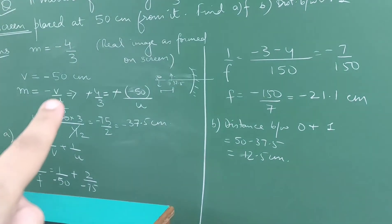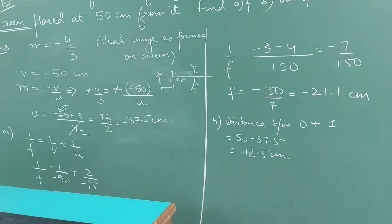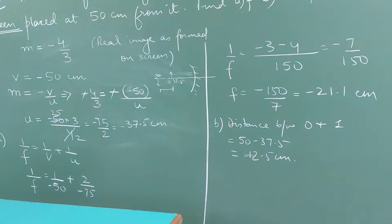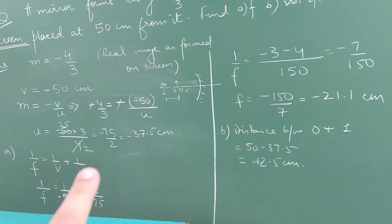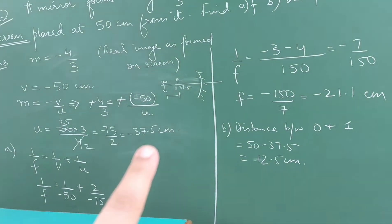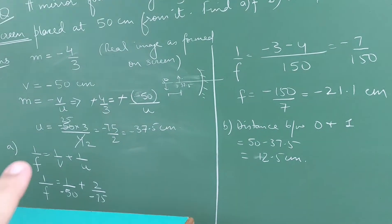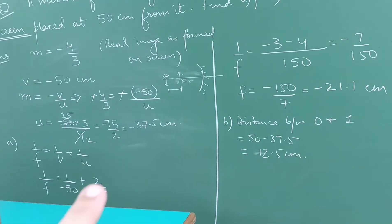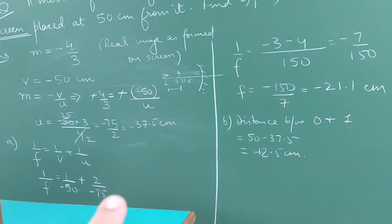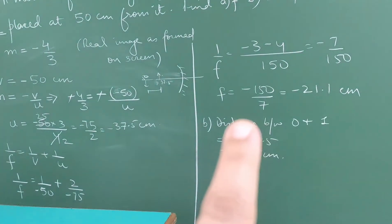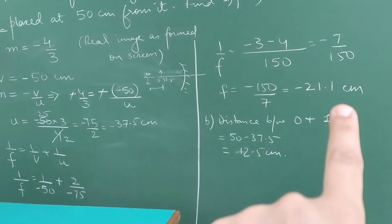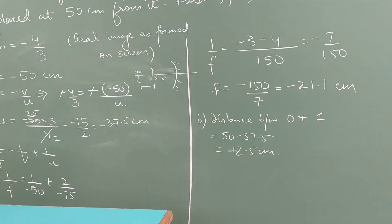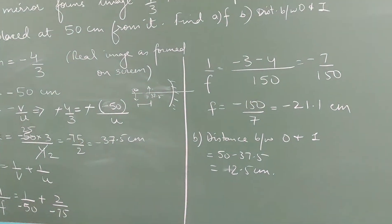Using the magnification formula m = minus v by u, substituting the values, we get object distance u as minus 37.5. Then applying the mirror formula 1/f = 1/v + 1/u and taking the LCM, the focal length comes out to be minus 21.1 centimeters.